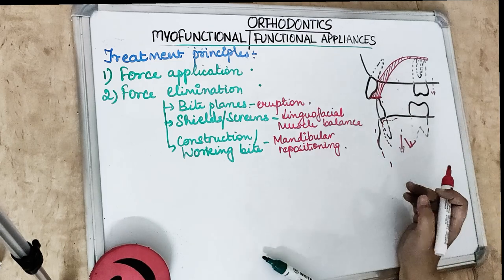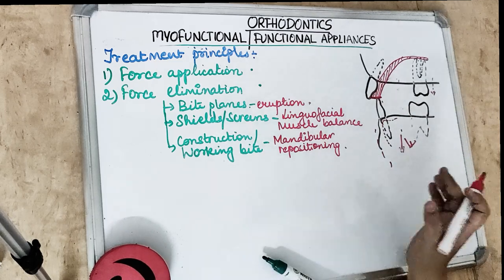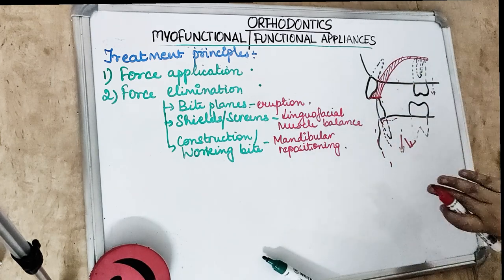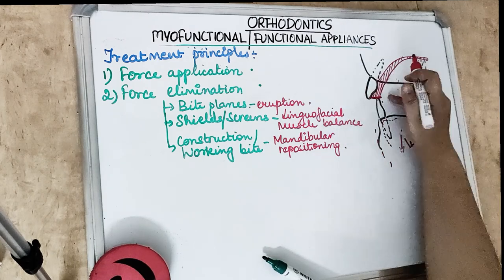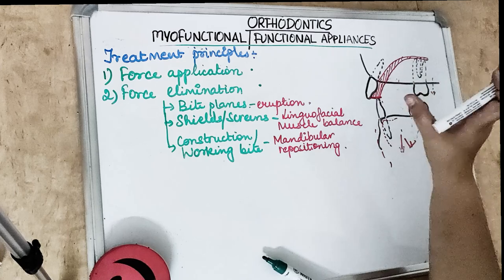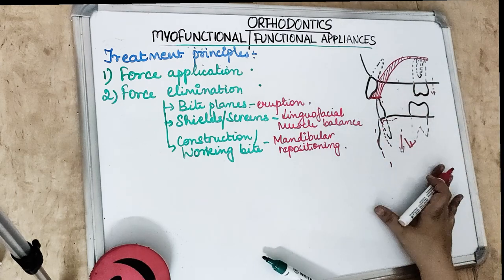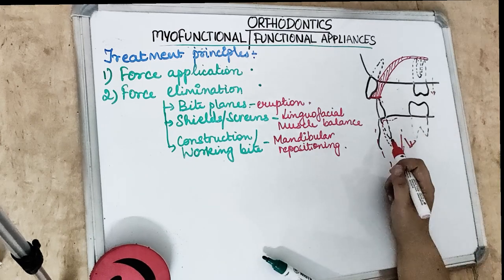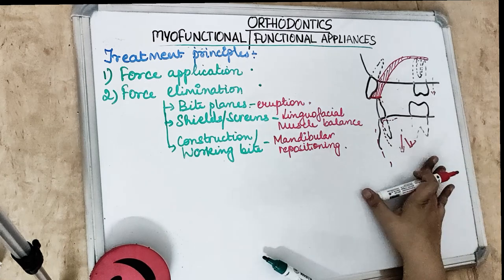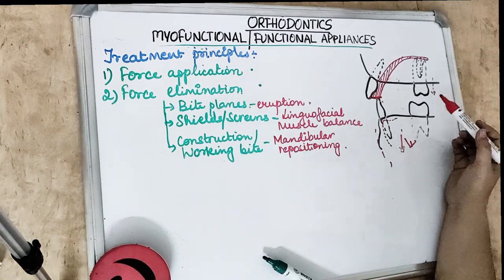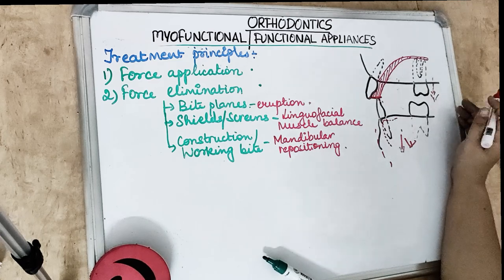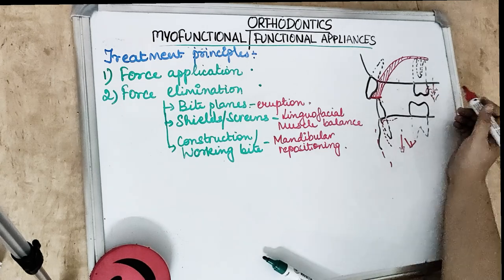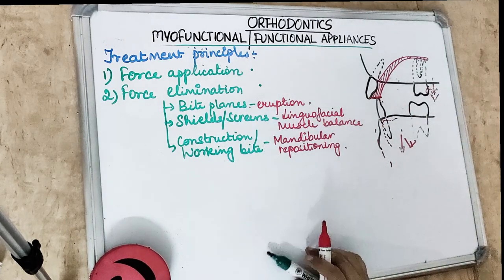Inclined planes are designed to provide guide planes — guiding the path of mandible closure to the correct position where the teeth should stop. These inclined planes guide the mandible for labiolingual displacement and mechanical eruption of the incisors. Remember that upper posterior teeth erupt and migrate not only in the vertical direction but also in the anterior direction.